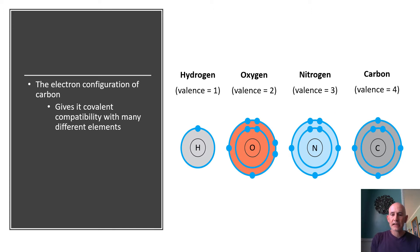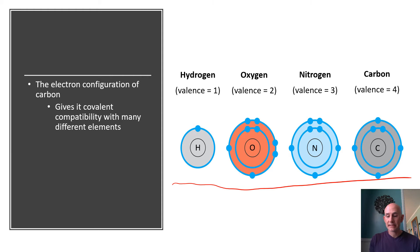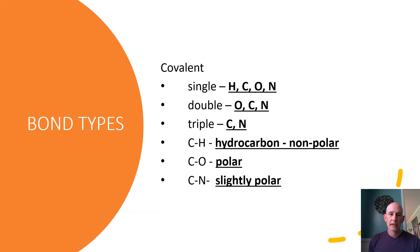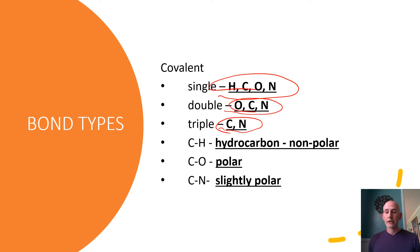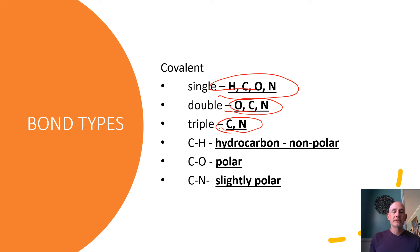Basic things that carbon will bond to are hydrogen, oxygen, nitrogen, and itself. It can bond singly to all of those, form double bonds to anything but hydrogen, and triple bonds to carbon and nitrogen. Carbon will never form a quadruple bond because that fourth orbital would be pointed in the opposite direction, preventing bond formation.